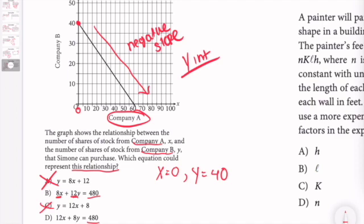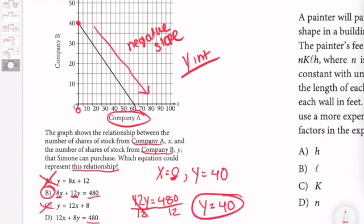So if I plug in to answer choice B, if I plug in 0, I would be left with 12Y is equal to 480. If I divide by 12, I get Y is equal to 40. So I know the answer choice is B.